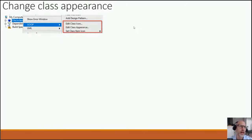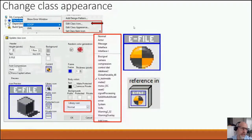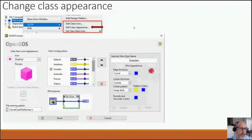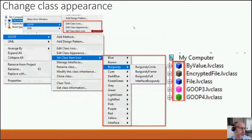After creating a class you can edit its appearance. Under right-click GOOP you have 'Edit Class Icon' which opens the dialog where you can change color and header. You also have library icon options — you can change it to images like actor or message icons. The 'Edit Class Appearance' option lets you set the class item icon and wire configuration, and you have a quick selection to set different colors to distinguish your classes.